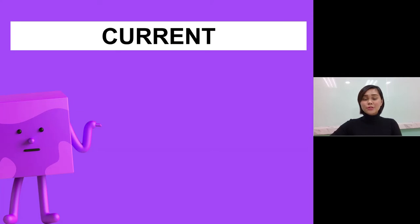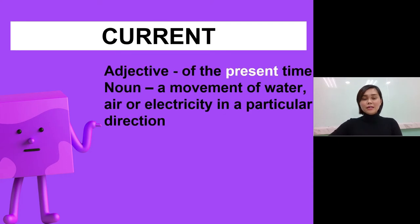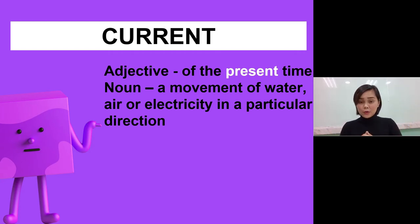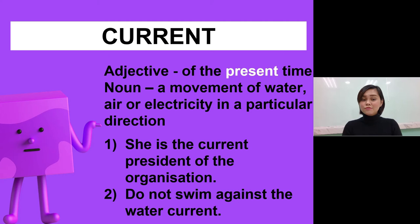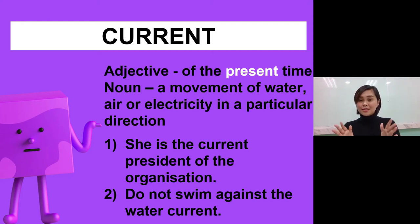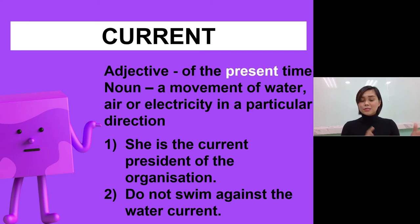How is this different from the second word 'current,' spelled C-U-R-R-E-N-T? As an adjective, it means of the present time. As a noun, it refers to the movement of water, air, or electricity in a particular direction. As an adjective, we can say: she is the current president of the organization — meaning she is the present president, or she is the president now. As a noun, we can say: do not swim against the water current — against the movement of the water.